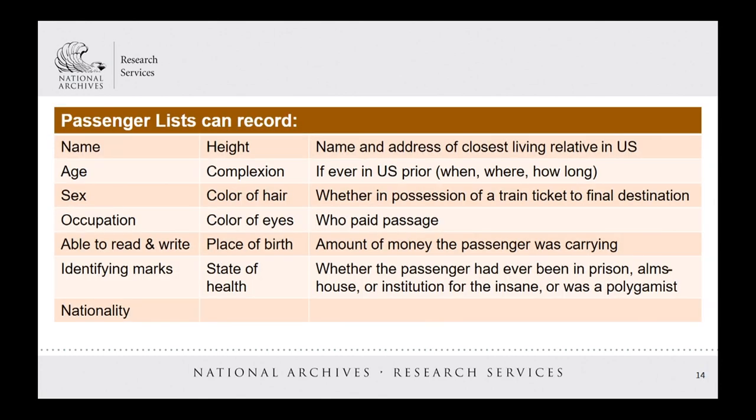Passenger lists can include a variety of information for the subjects recorded, including name, physical description, age, occupation, place of birth, and name and address of closest living relative in the U.S., and so on.